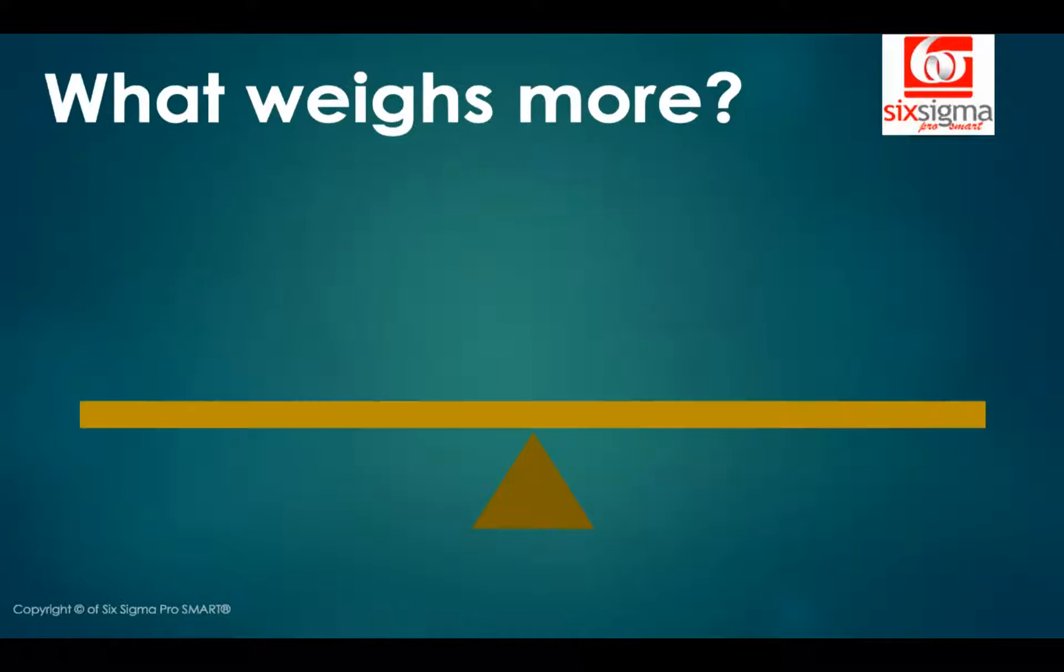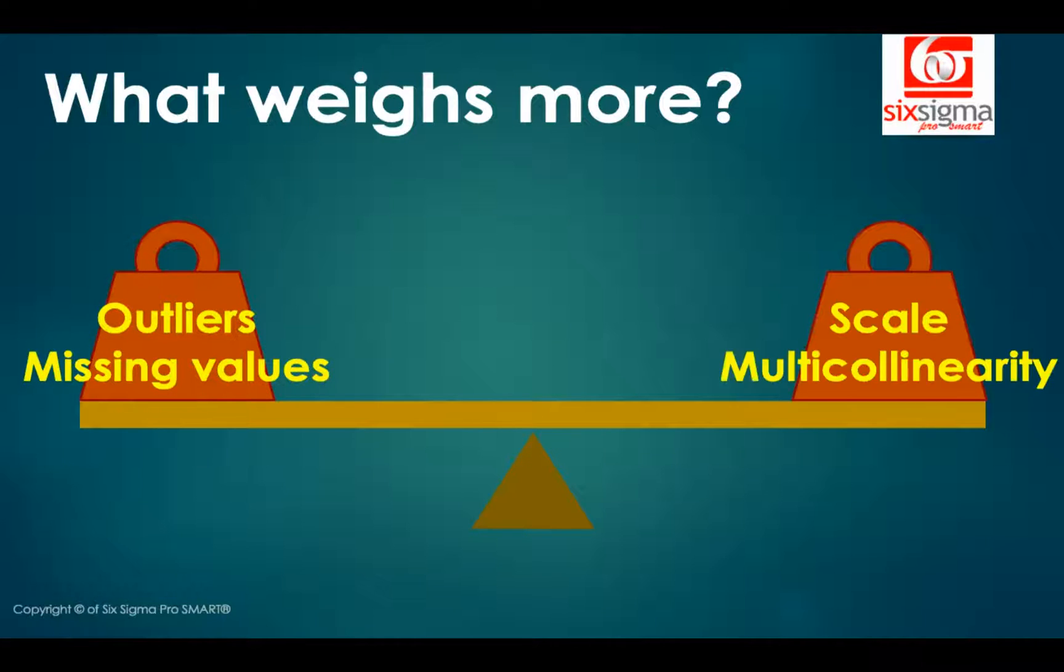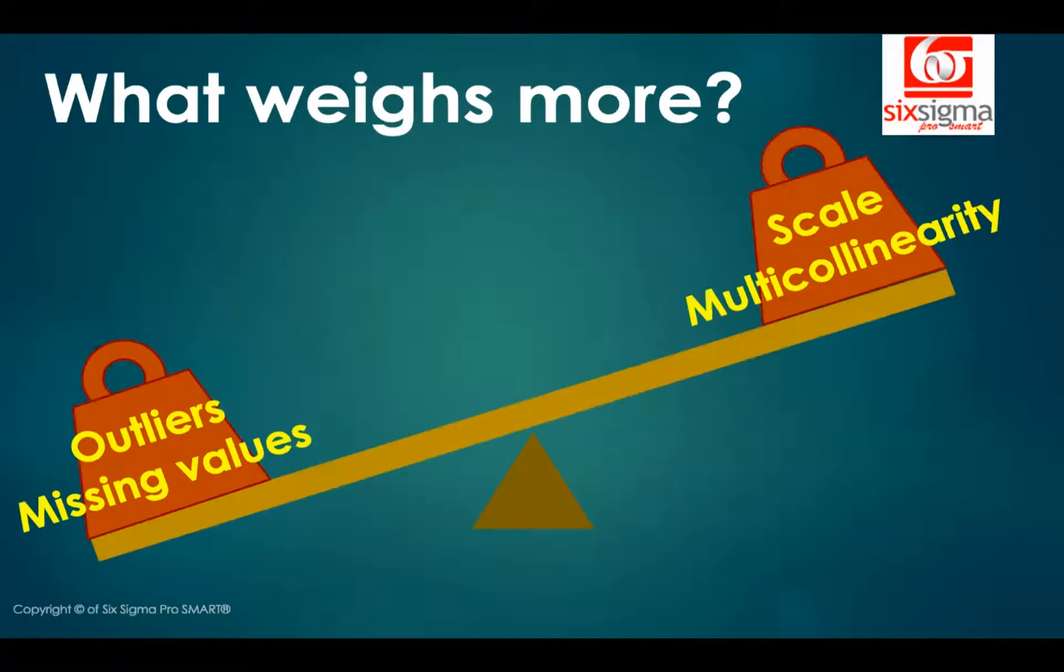Let's get started. Let's understand it in terms of a weighing scale. What weighs more? We have two teams here. The first team is outliers and missing values, and the second team is scaling issues and multicollinearity. I'm saying that outliers and missing values should be given a higher priority.